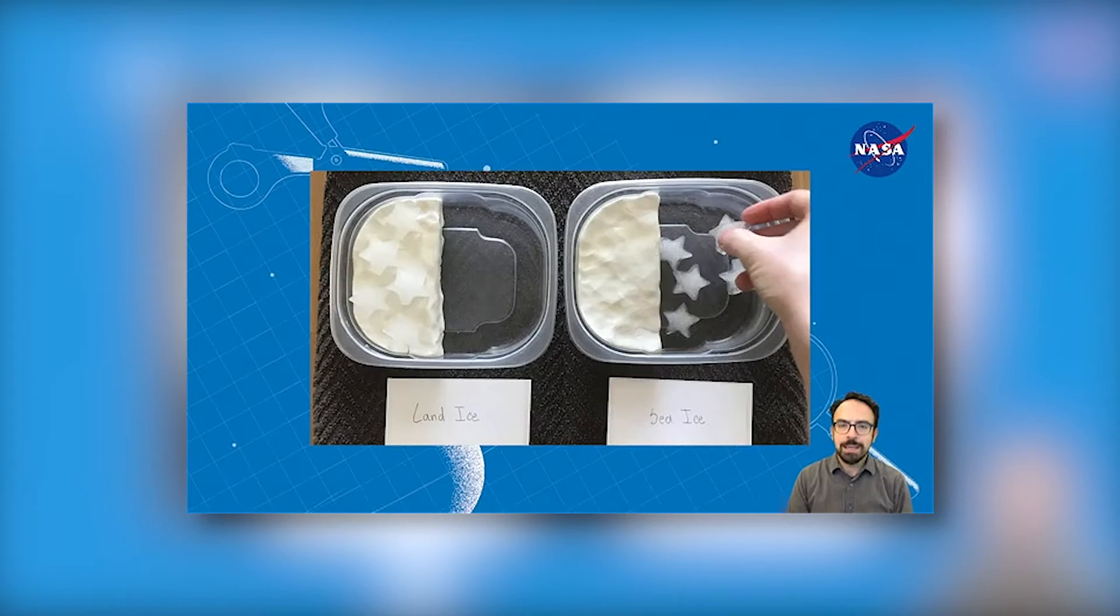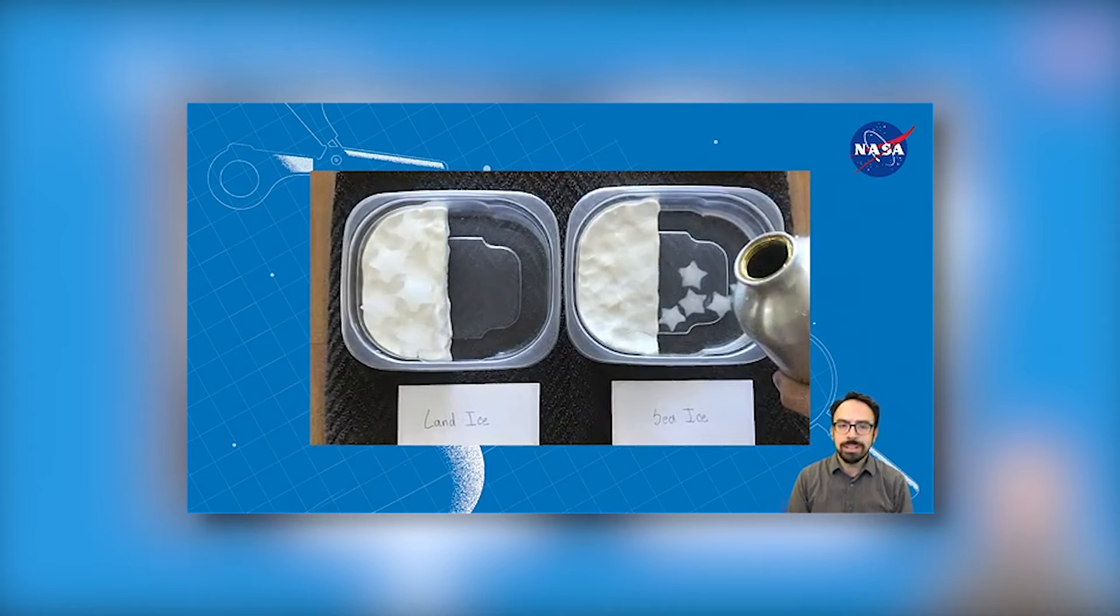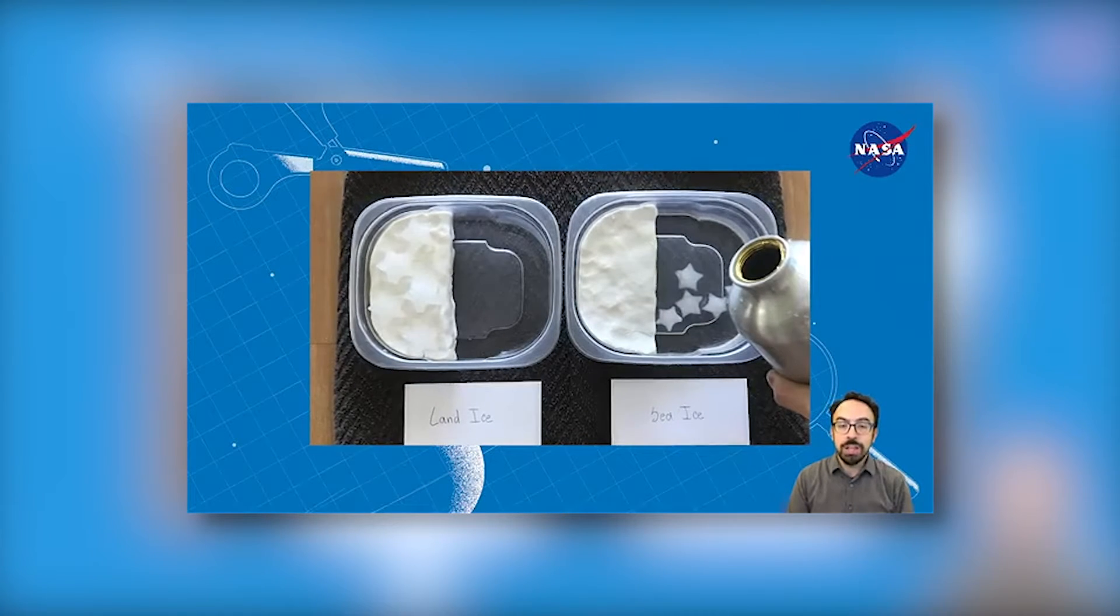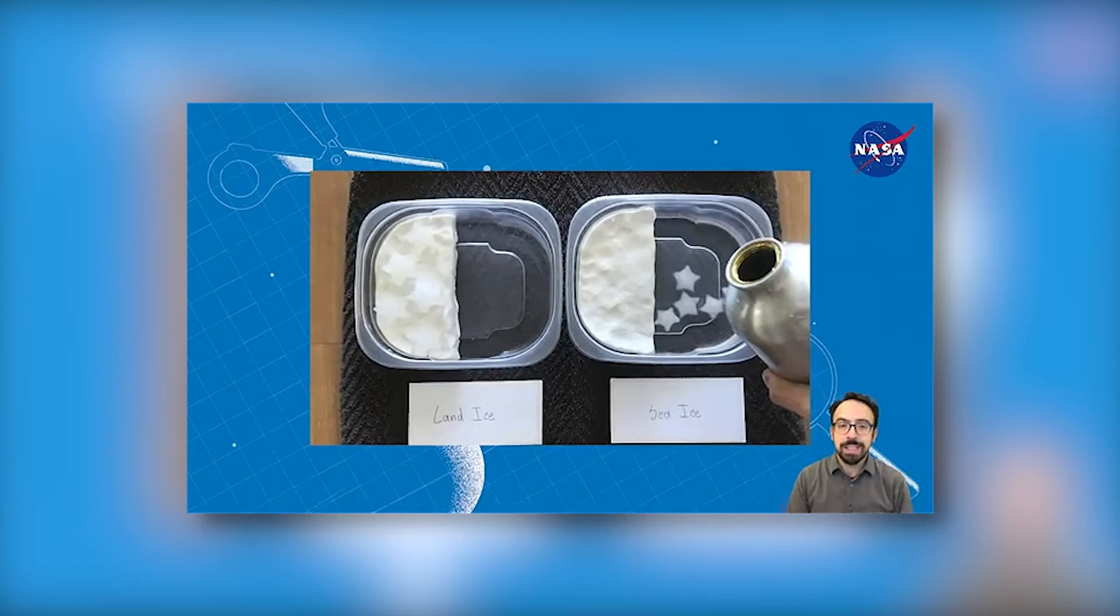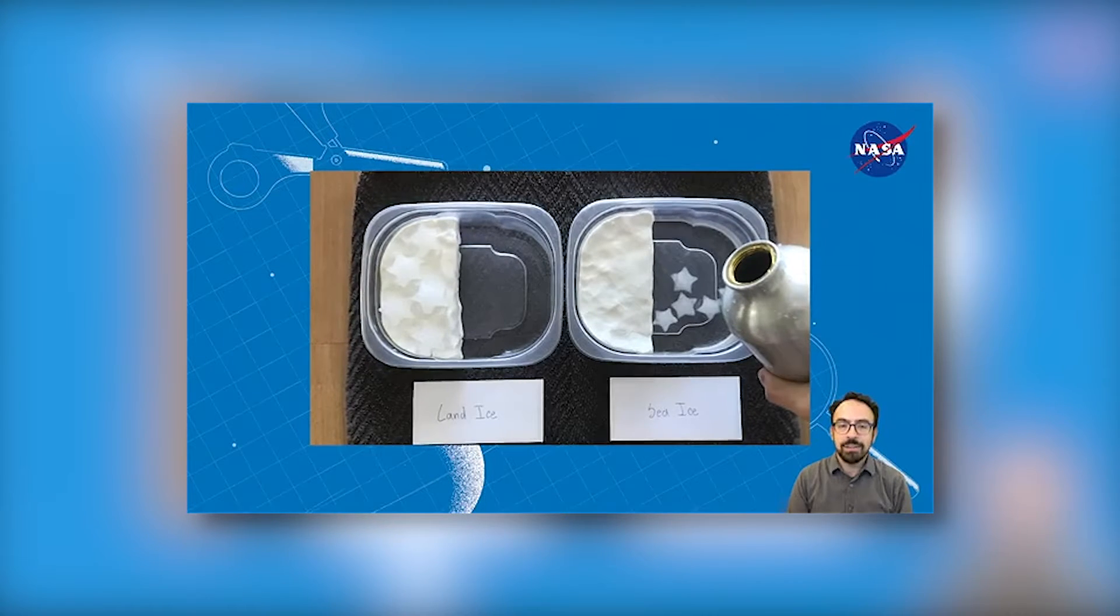In the other container, place the same number of ice cubes on the bottom of the container, next to the land. This represents sea ice. Then, pour cold water into the sea ice container until the ice floats. Make sure none of the ice is resting on the bottom of the container and that the water isn't higher than the land.